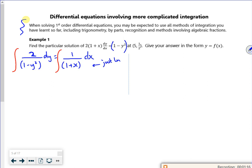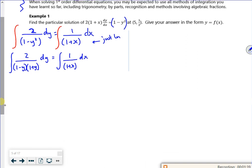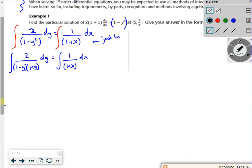If it was y squared minus 1, you'd kind of think about splitting it as a difference of two squares. So that's what I'm going to do now. So that would be 1 minus y and 1 plus y dy, and that's 1 plus x dx. So this one here, I've got to use partial fractions. Who doesn't love a bit of partial fractions?